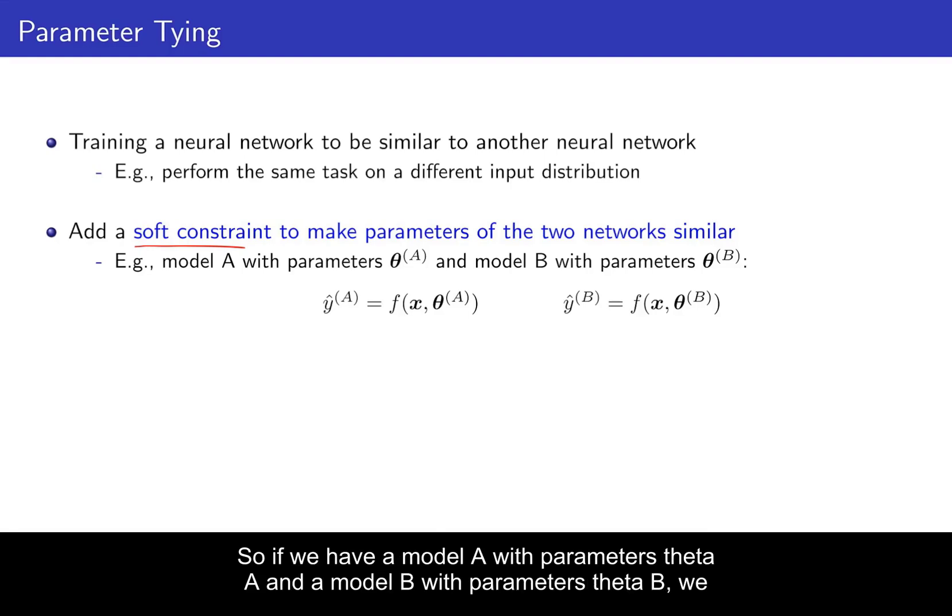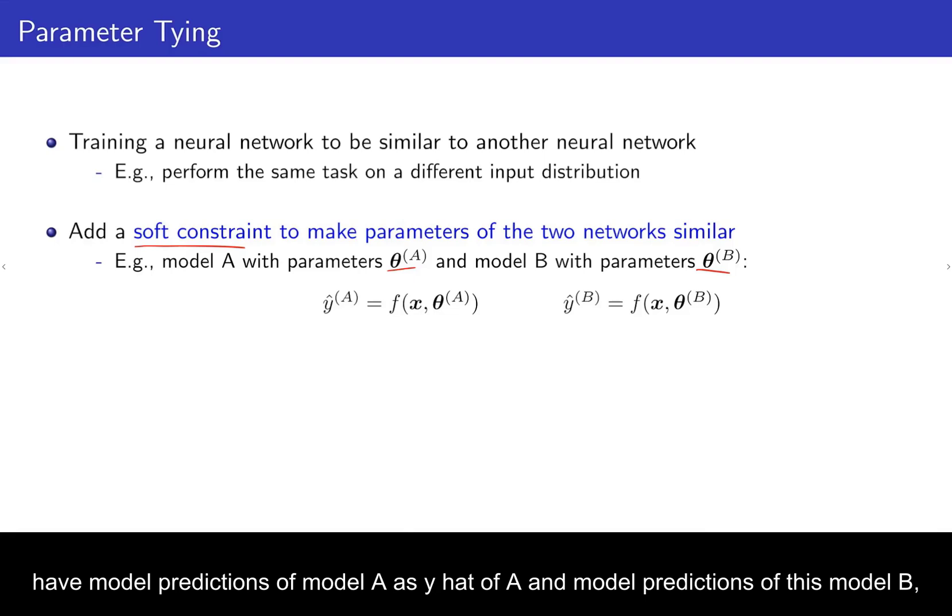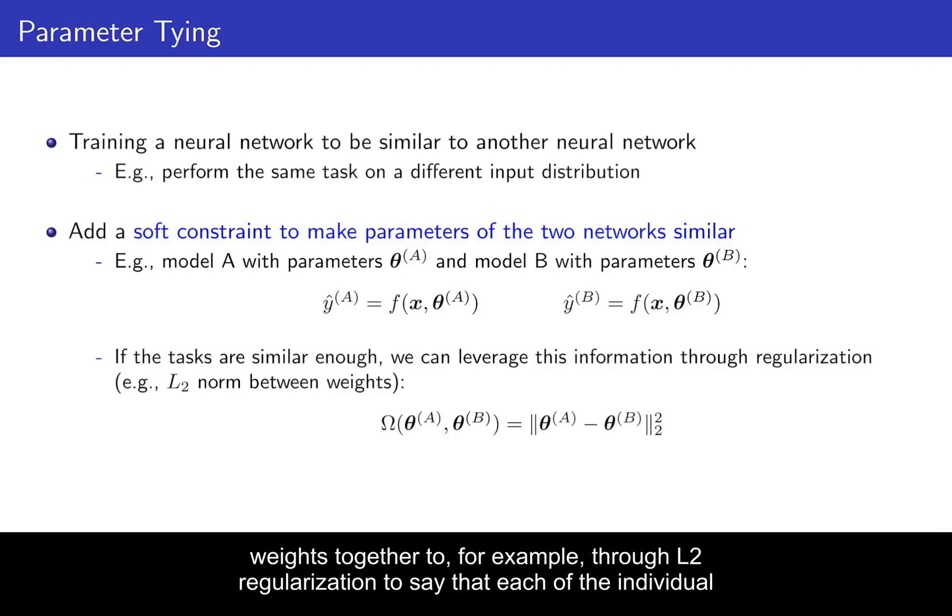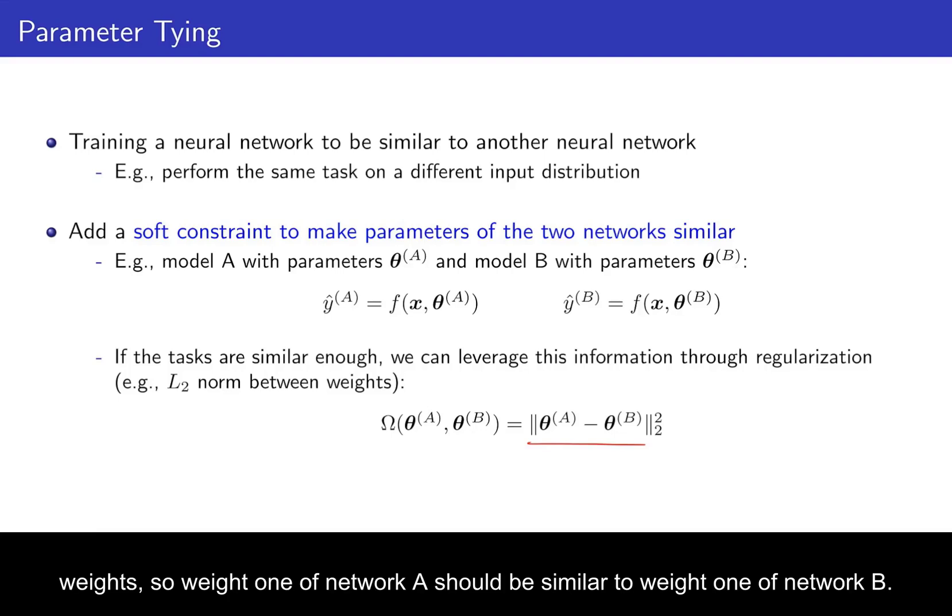So if we have a model A with parameters theta A and a model B with parameters theta B, we have model predictions of model A as Y hat of A, and model predictions of model B. Then we can actually say if these tasks are similar enough, then we can try to tie their weights together to, for example, through L2 regularization, to say that each of the individual weights. So weight one of network A should be similar to weight one of network B. And we'll quantify that actually through an L2 penalty.